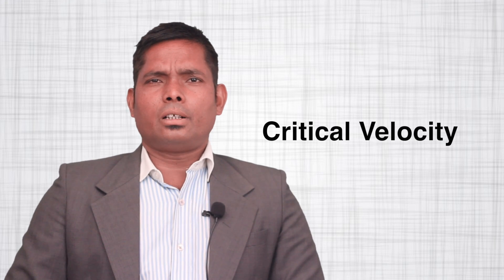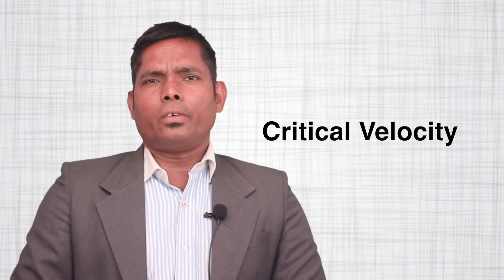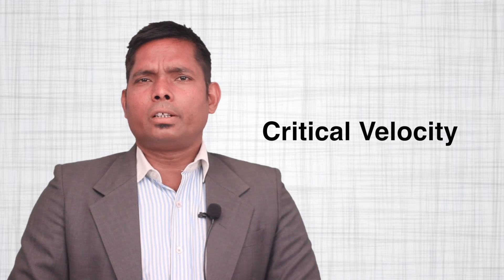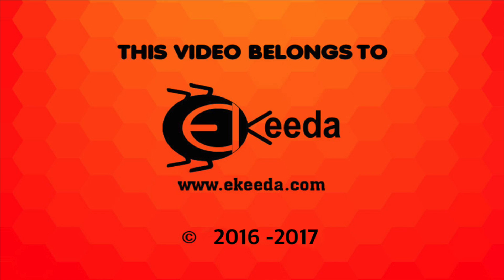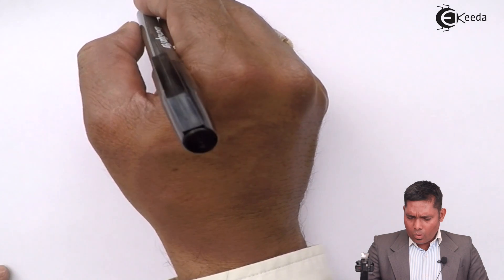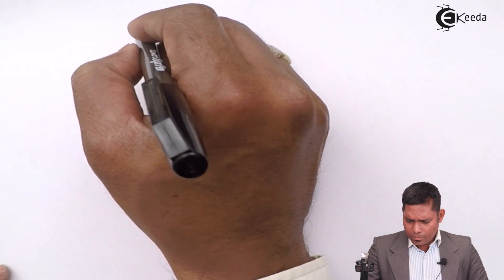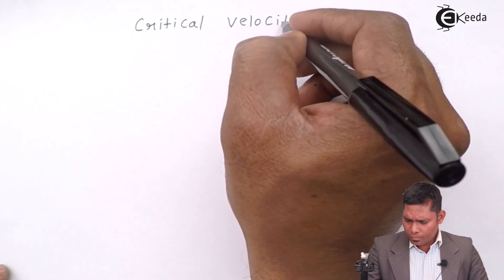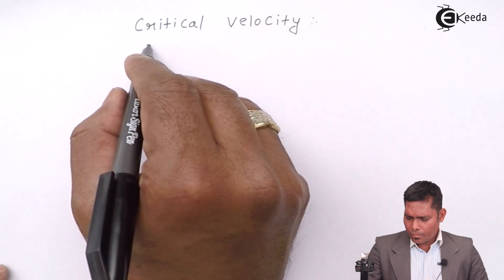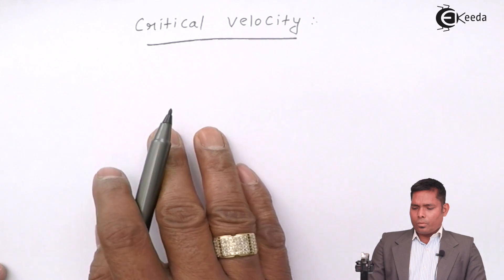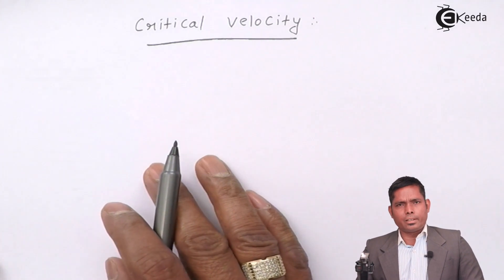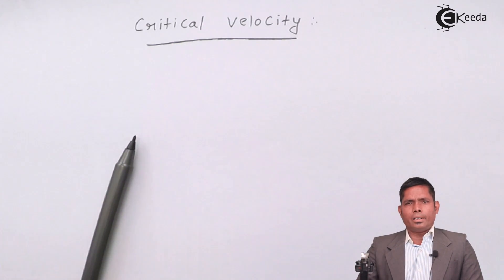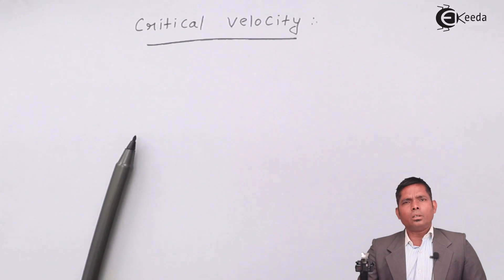Hello students, let us discuss the critical velocity of a satellite — that means how much velocity must be provided for satellite motion. Critical velocity of a satellite is the minimum velocity that you provide so that it successfully completes the rotation around the planet.